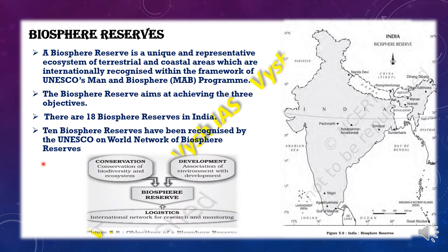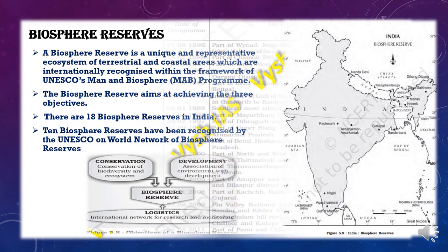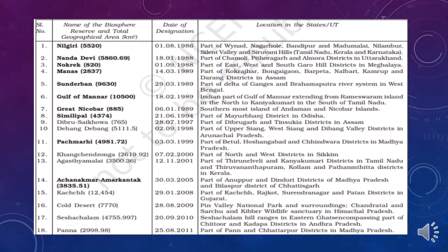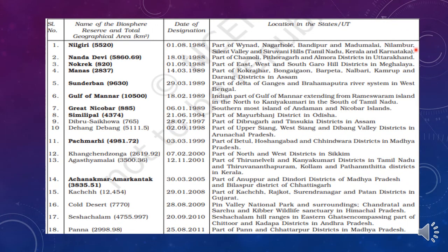The three objectives of biosphere reserves are: conservation of biodiversity and ecosystem, association of environment with development, and logistics — the international network for research and monitoring. The 18 biosphere reserves are listed with their location in states and union territories. Make sure you take a screenshot and make notes on this, as you will need to memorize where each is located and the types of animals and vegetation found there.